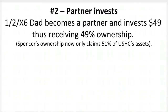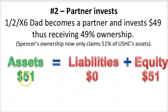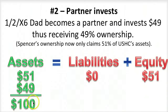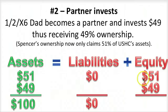On day two, a partner invests. On January 2nd, X6, Dad becomes a partner and invests $49, thus receiving 49% ownership. Spencer's ownership now only claims 51% of USHC's assets. Our prior balance sheet showed $51 in assets and Spencer's equity. Now, with Dad's contribution of $49, total assets are $100. Liabilities didn't change, but Dad now has equity of $49 claimed against those assets, and therefore we balance again.